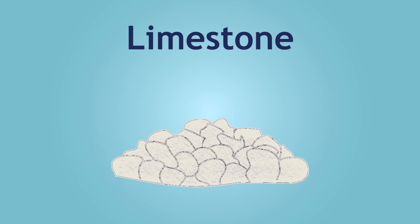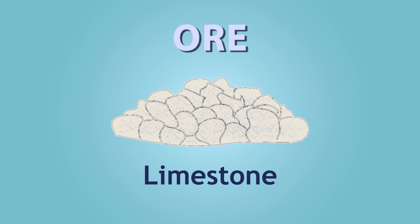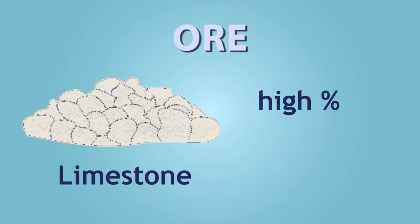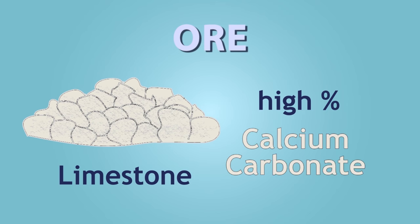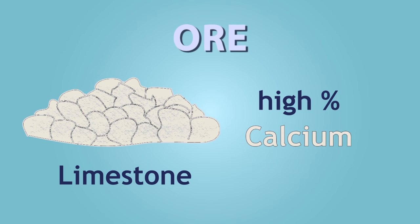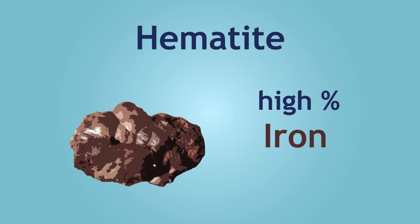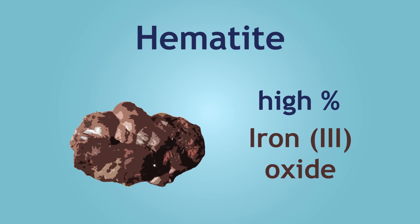Limestone is also an ore. Can you remember what is found in a high percentage in limestone? Pause, think, and continue when ready. The answer is calcium carbonate. Limestone contains a high percentage of calcium, but calcium exists as calcium carbonate. The iron in hematite is mostly iron(III) oxide.